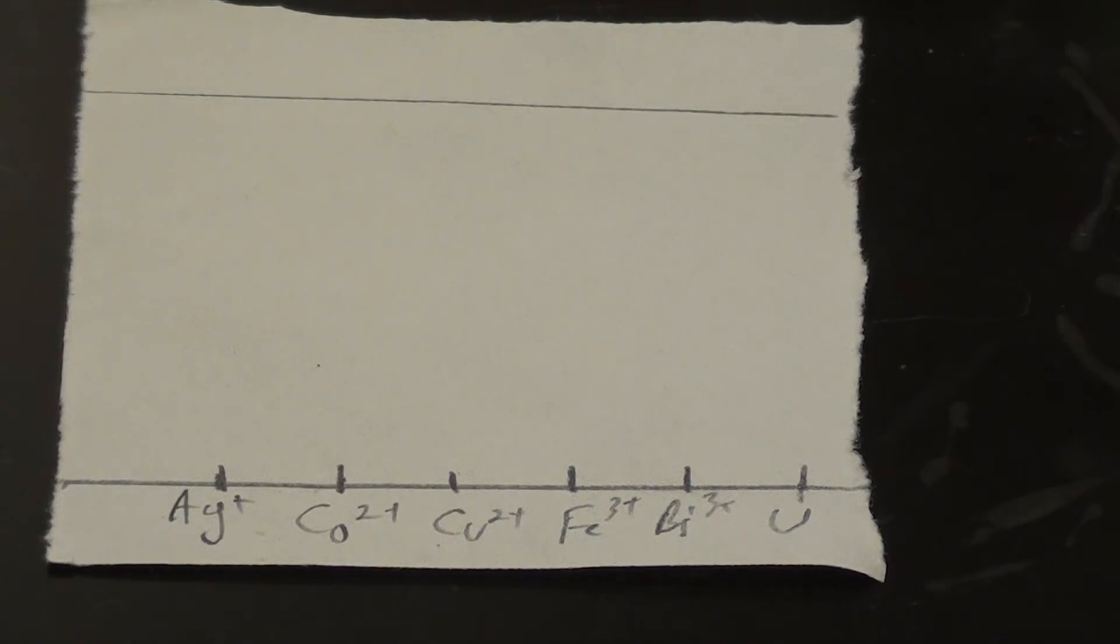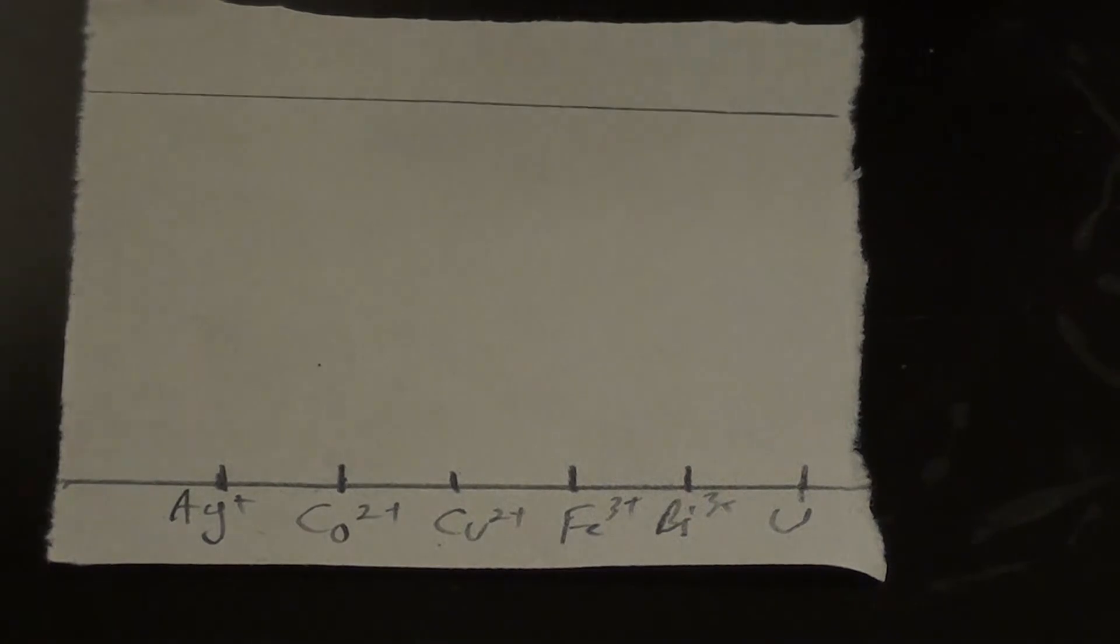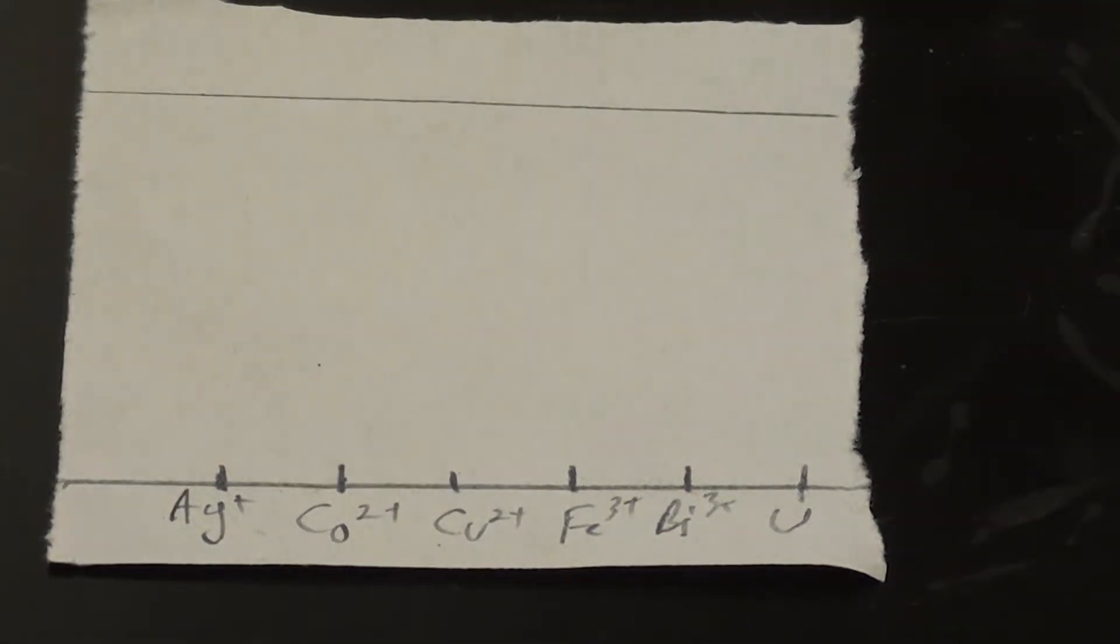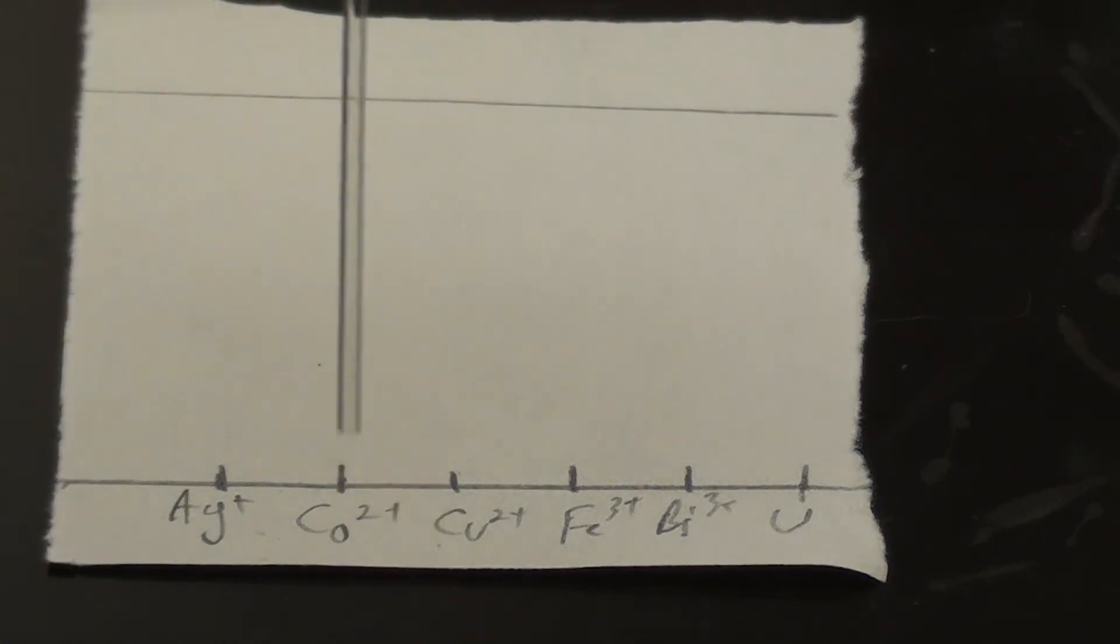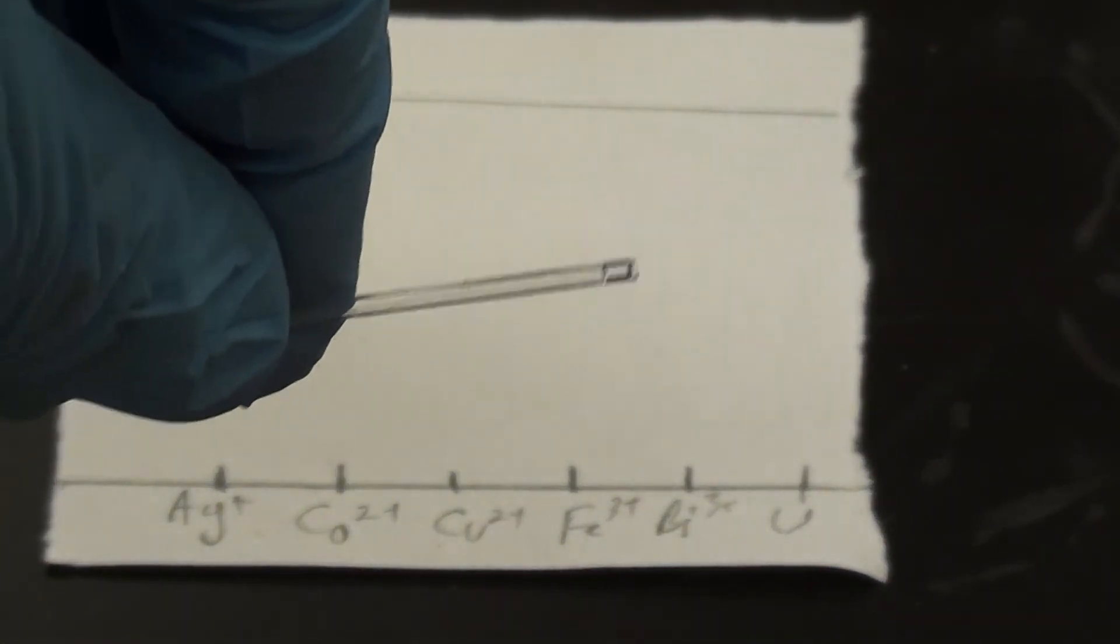Now what I'm going to show you is how we actually spot the plate or TLC paper. And what we're going to be using here is what's called a capillary. Now a capillary is a long thin tube, it's open at both ends.